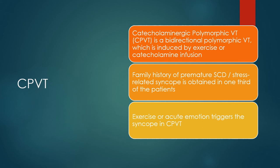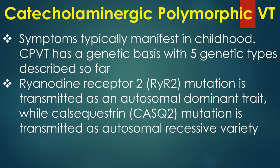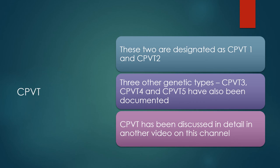Catecholaminergic polymorphic ventricular tachycardia is a bidirectional polymorphic VT induced by exercise or catecholamine infusion. Family history of premature sudden cardiac death and stress-related syncope is obtained in about a third of patients. Exercise or acute emotion triggers syncope in CPVT, with symptoms typically manifesting in childhood. CPVT has a genetic basis with 5 genetic types: ryanodine receptor 2 mutation transmitted as autosomal dominant, and calsequestrin mutation transmitted as autosomal recessive, designated CPVT1 and CPVT2.